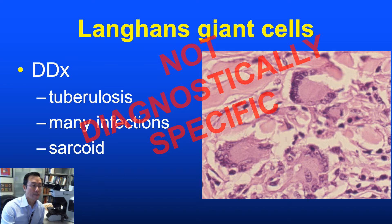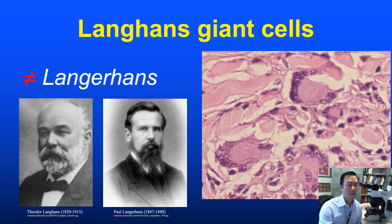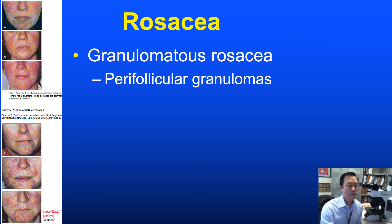Within the world of granulomas, the Langhans giant cell is not at all diagnostically specific. A practical point is not to confuse Langhans with Langerhans — both German pathologists from the 19th century with significant but mutually exclusive contributions. The differential diagnosis for Langhans giant cells mirrors that for tuberculoid granulomas: not just tuberculosis, but a wide variety of infections — particularly mycobacteria and fungi — as well as non-infectious disorders such as rosacea.